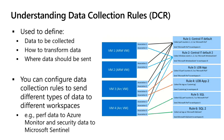We've got an association here with the data collection rule relevant to central IT default. This is collecting information about Microsoft performance and sending it to Workspace A. However, the same machine has an association with another data collection rule that covers Windows events, and in that case we're sending the Windows event data to Workspace B.